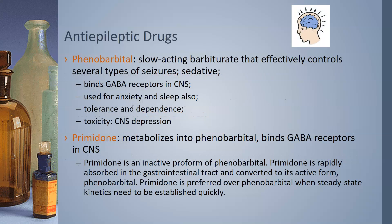The first anti-epileptic drug is phenobarbital. It is a slow-acting barbiturate that effectively controls several types of seizures. It is a sedative that binds GABA receptors in the central nervous system and is also used for anxiety and sleep. Patients can develop tolerance, meaning they need more and more for the same effect, and dependence, meaning they become addicted. The toxicity of phenobarbital is central nervous system depression — patients can easily overdose and go into a coma.